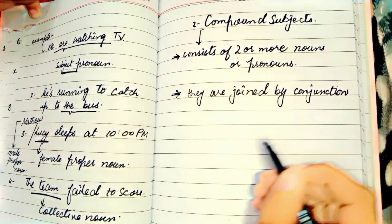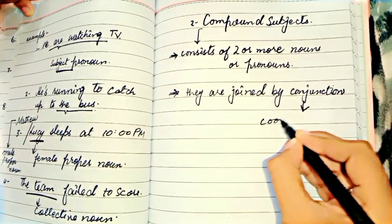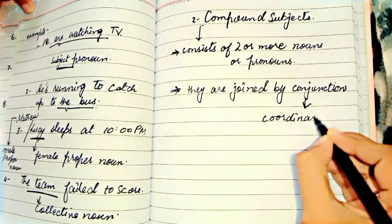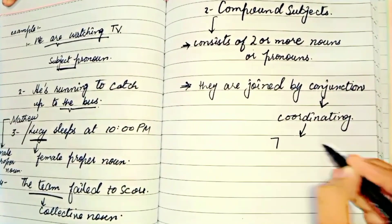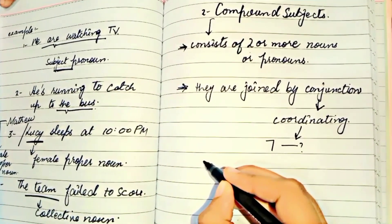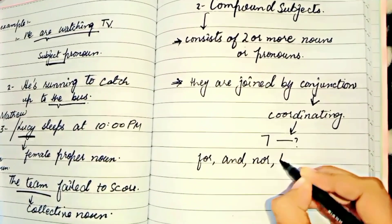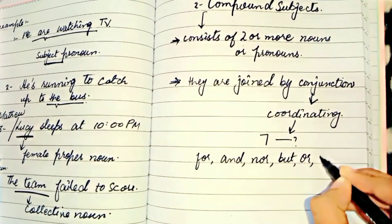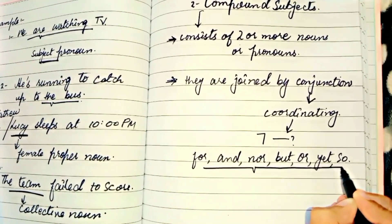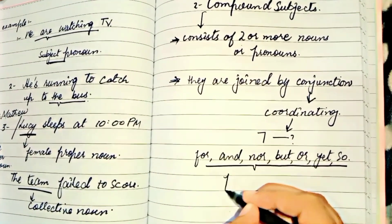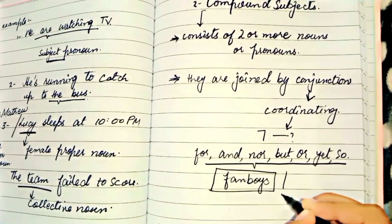We are using conjunctions to join these elements. Conjunctions are basically joining words that join two clauses, sentences, or phrases together. We are using coordinating conjunctions — there are seven coordinating conjunctions: for, and, nor, but, or, yet, so. We can categorize these using the short form 'FANBOYS' — taking the initial letter of each word. FANBOYS makes it easy to remember.